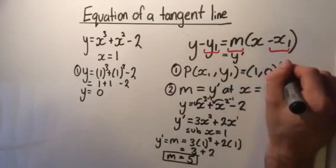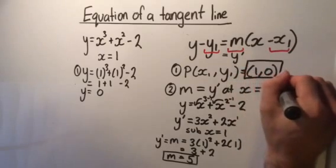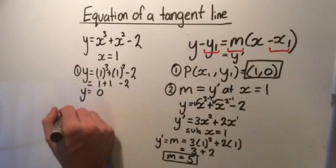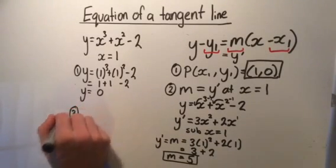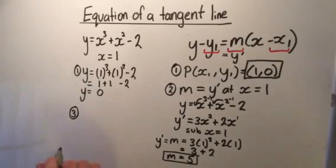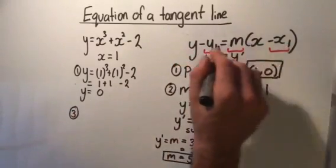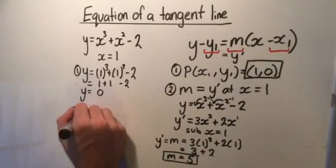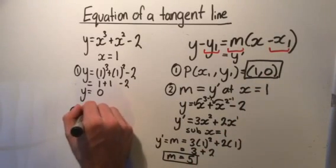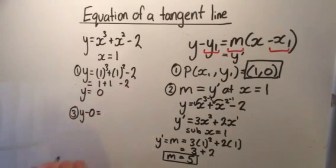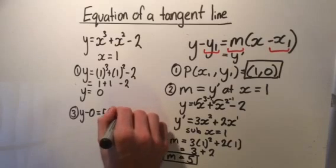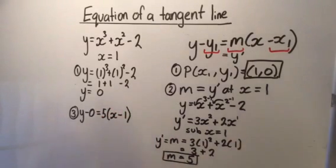And I know that our point equals 1, 0. So we use the derivative to find the gradient in our point gradient formula. So let's go back over here. Step number 3. And let's just replace these values of y1, x1, and m with our point and our gradient. So we know we have y minus 0 equals 5, which is our m, times x minus 1.